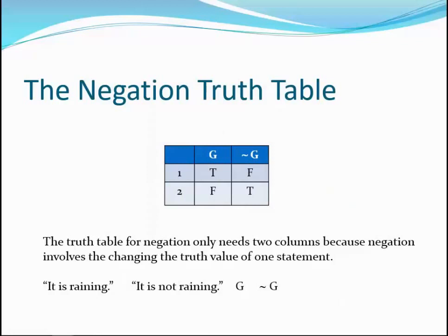The truth table for negation is even simpler. Negation is represented by the use of the tilde in front of the original statement. The base table is just one column with two rows. The negation in front of a statement simply reverses its truth value, shown in the second column. In this example, the truth value of 'It is raining' is reversed when negated, which can be expressed as 'It is not the case that it is raining,' or more commonly, 'It is not raining.' The negation is the only connective that modifies a single statement rather than establishing a link between two different statements.